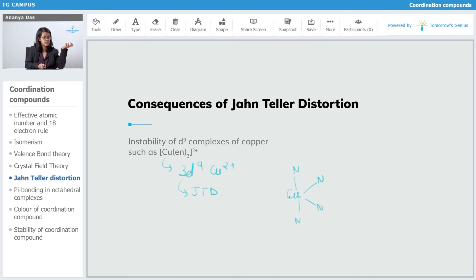It's EN, right? So it's a bidentate ligand. But because of JTD, and it is z-out, so the bonds are going to get elongated. And only the tetragonal bonds are going to get elongated.